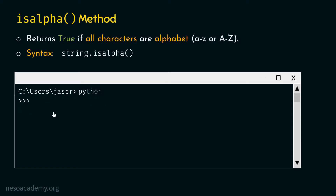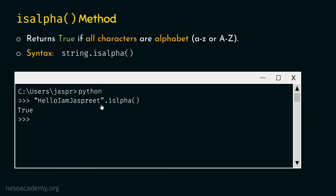Let's see one more example. This time, let's type 'helloiamjustbreathe'.isalpha() — this time there is no whitespace. If we hit enter, we will get true as a result, because each and every character is an alphabet. We need to remember that isalpha returns true only if all characters are alphabet — not even whitespace characters are allowed.